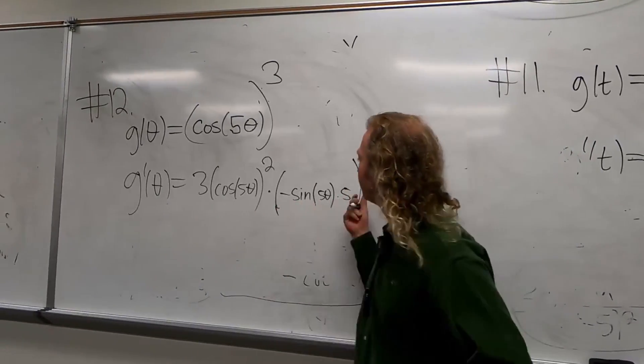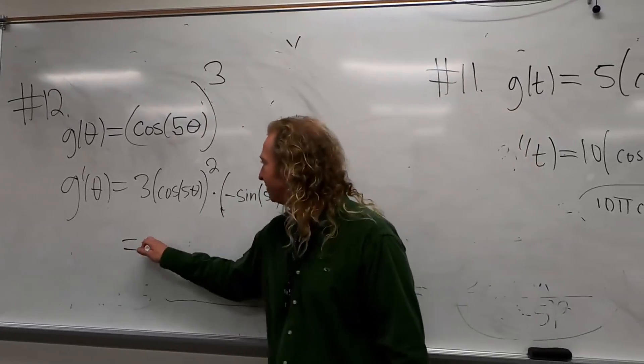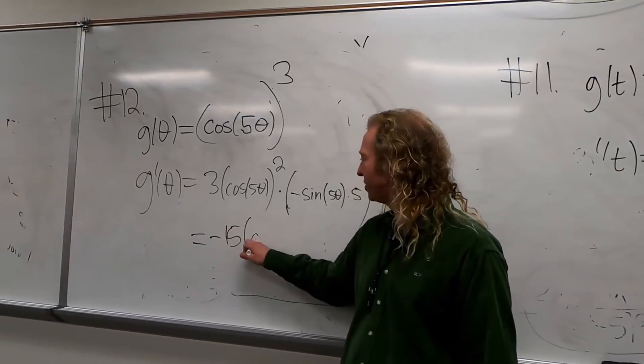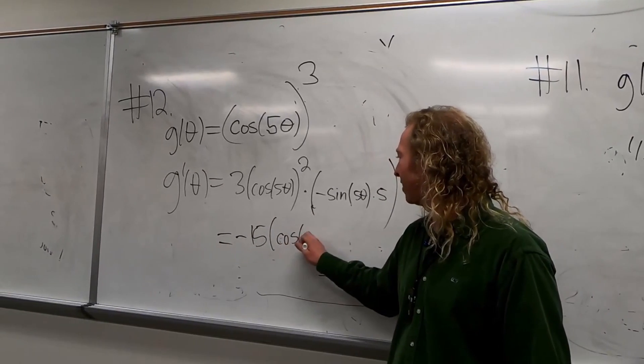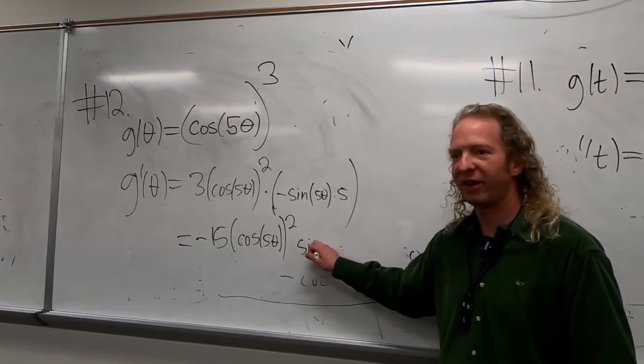Maybe just put it all out front. It's going to give us a negative 15. Yeah, negative 15. Nice problem. Parenthesis, cosine of five theta squared. Squared. Thanks. Sine of five theta.